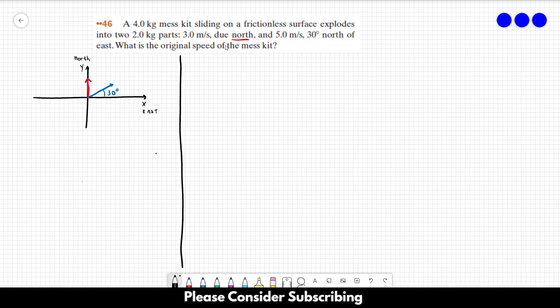Since we don't have any external forces acting on our system, then we have that the initial linear momentum must be equal to the final linear momentum. And the initial linear momentum is just the mass of the mass kit times its velocity, let's call it v.